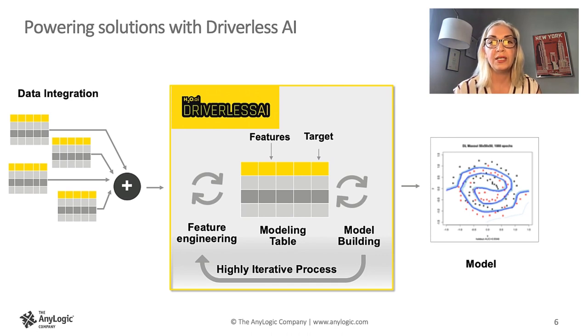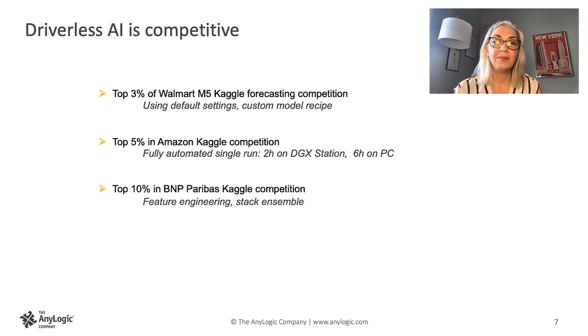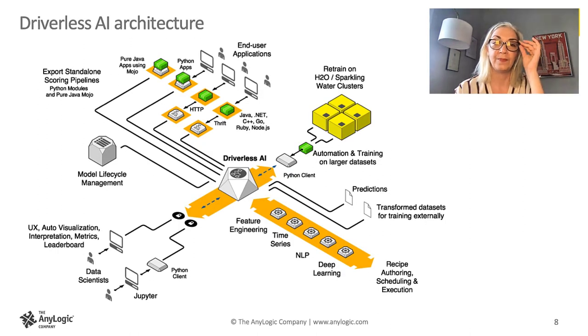Once the training process is complete, the model can then be exported from driverless AI with one click as an independent scoring object, a mojo, we call them, that contains both the optimized feature transformation pipeline and the final model. The mojo is available as either a Java or a C++ runtime and supports both Python and R wrappers. Driverless AI performance was placed very high in Kaggle competitions where AutoML software was allowed to compete, reaching top percentage points among thousands of competing data scientist teams.